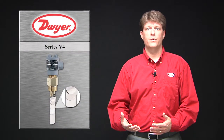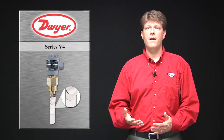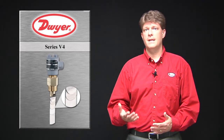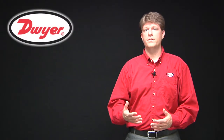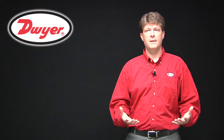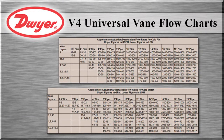The V4 flow switch comes standard with a universal vane that has five adjustable layers for field setting the actuation and deactuation flow set point. The universal vane works in 1.5 to 20 inch pipe sizes for fluid or gas applications. Our catalog page and instruction manual show the approximate actuation and deactuation rates according to fluid, pipe size, and vane layer selected.